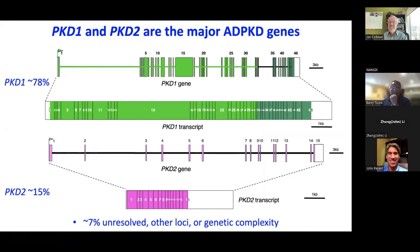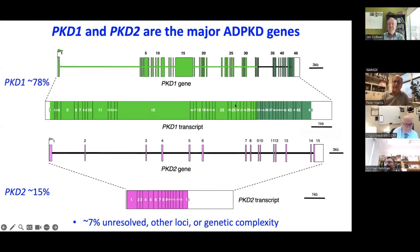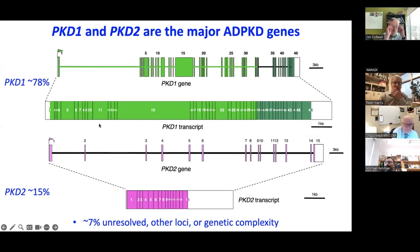PKD1 accounts for about 78% of a well-characterized ADPKD population. It encodes a rather large transcript, and two-thirds of it is within a duplicated region of the genome, which makes screening for variants more complex. Capture next-generation sequencing methods work well, but there are still some regions — very GC-rich or matching pseudogenes closely — that may not be well represented. PKD2 is a more conventional gene with a 3KB open reading frame.